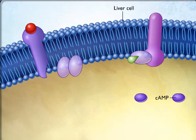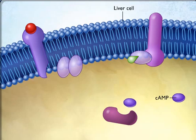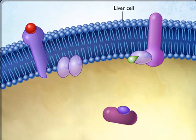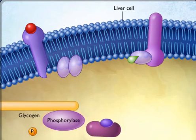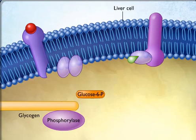The cAMP formed at the inner surface of the membrane diffuses within the cytoplasm, where it binds to and activates protein kinase A, an enzyme that adds phosphate groups to specific cellular proteins. In liver cells, protein kinase A phosphorylates and thereby activates another enzyme called phosphorylase, which converts glycogen into glucose 6-phosphate. The glucose 6-phosphate is then converted to glucose.